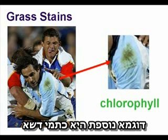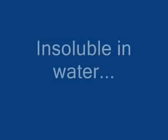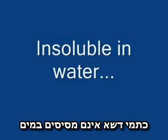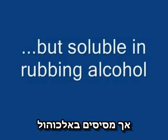Another example is grass stains. The grass stains are insoluble in water, but soluble in rubbing alcohol.